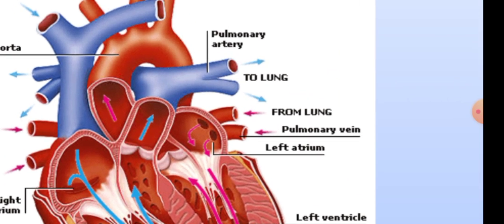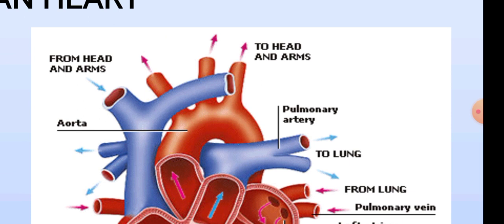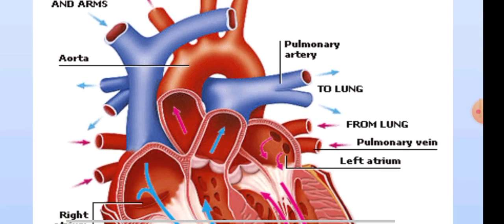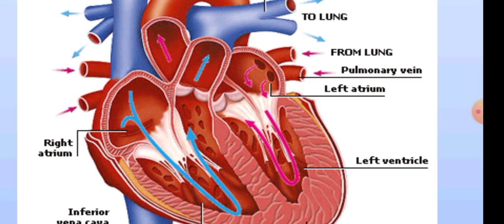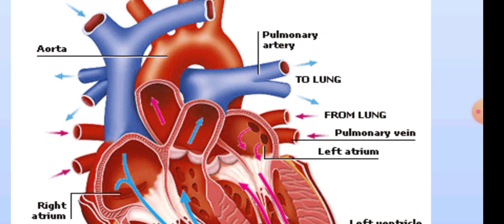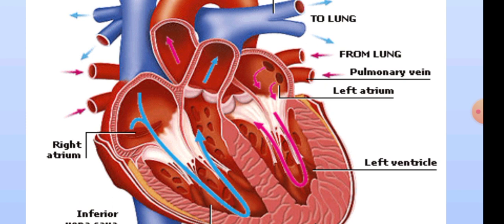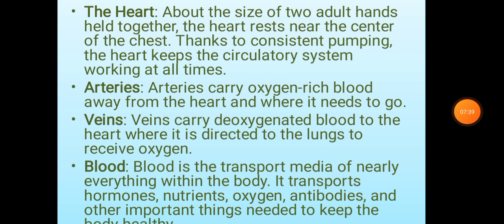In this picture you can understand how deoxygenated blood from all parts of the body comes to the heart, shown in blue color. The heart then pumps this deoxygenated blood towards the lungs. Oxygenated blood from the lungs is carried into the heart via the pulmonary vein. Likewise, deoxygenated and oxygenated blood are transported throughout the body by releasing and receiving carbon dioxide and oxygen.